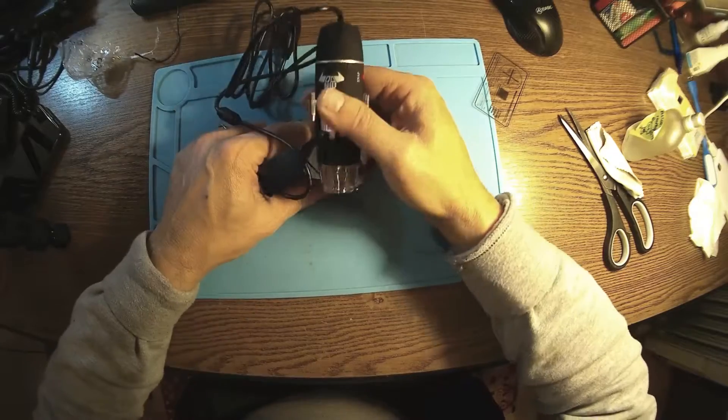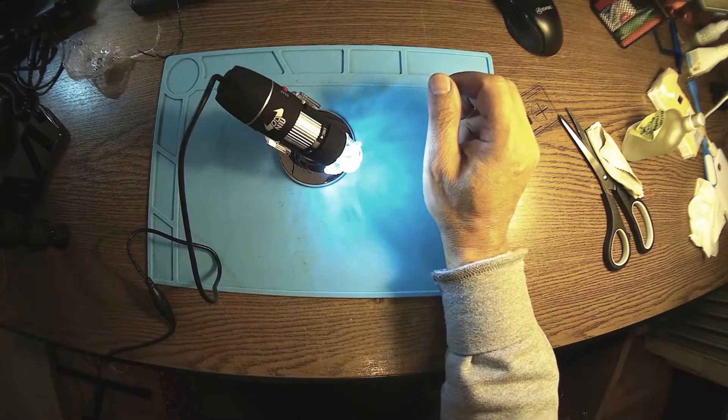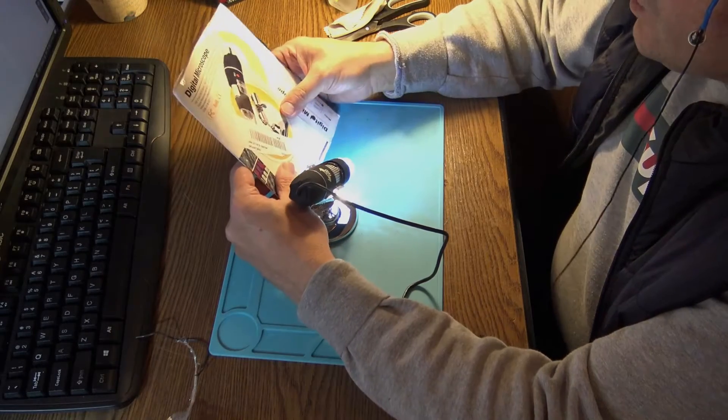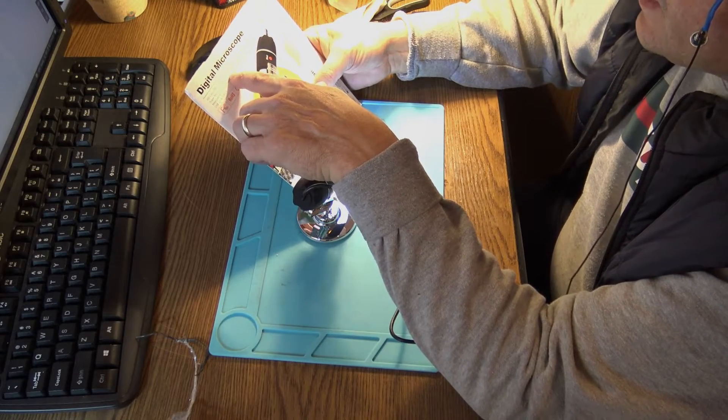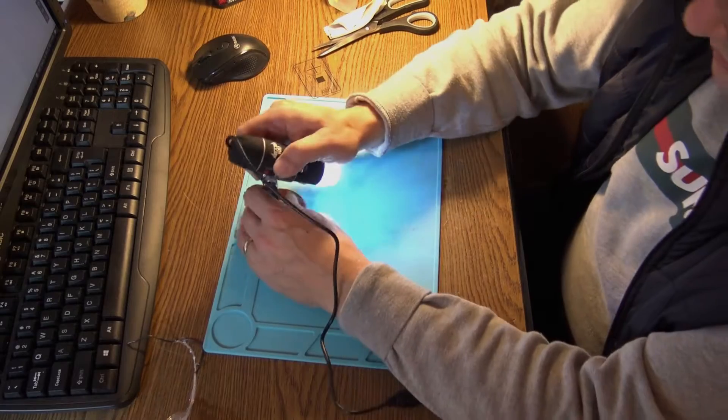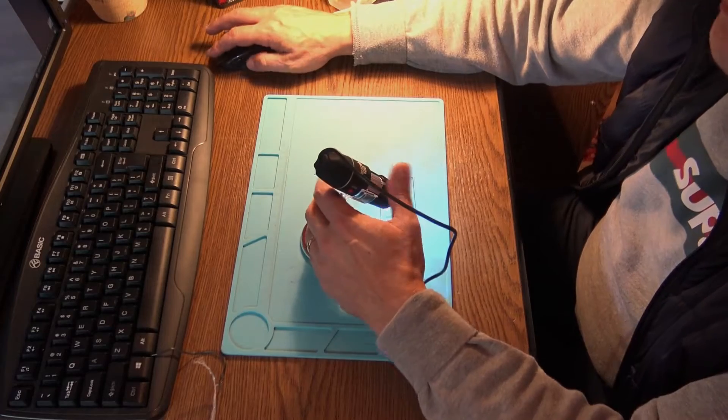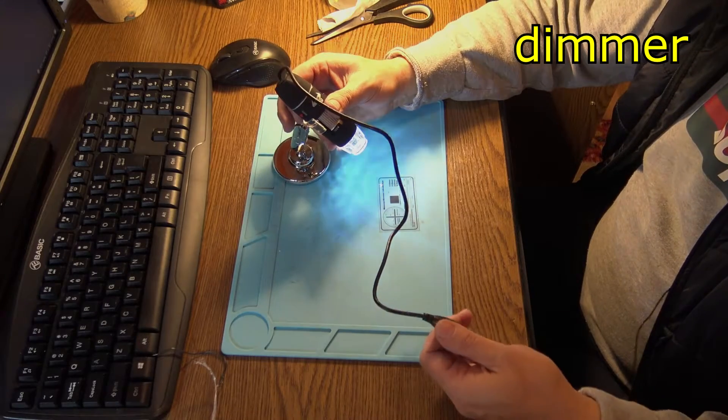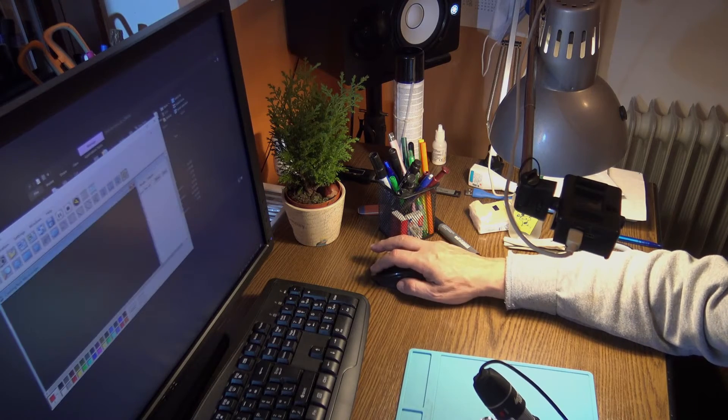USB, I think this is USB 2. They advertise 500 times magnification, of course, resolution 640 by 480 to 1600 by 1200. I don't believe that low resolution, but for this purpose I think it's okay. Let's see what we got here. We already have picture on the screen. Here we have the LED power light. Let's install the software.